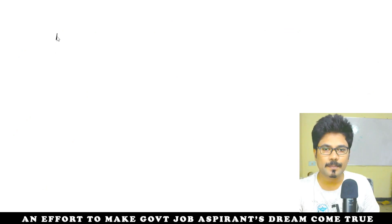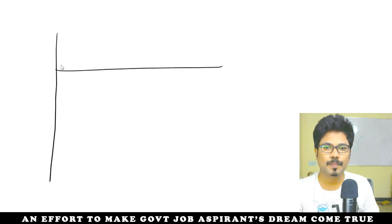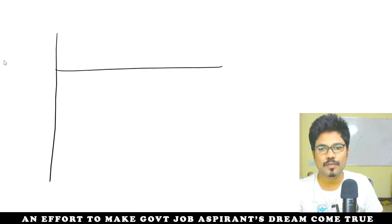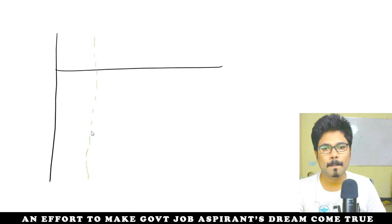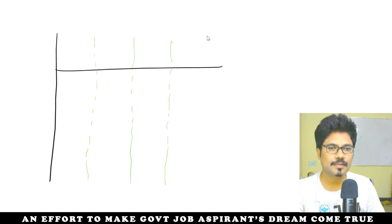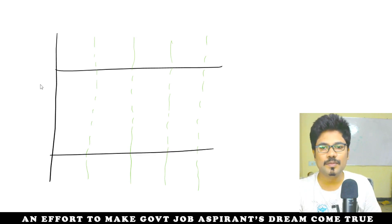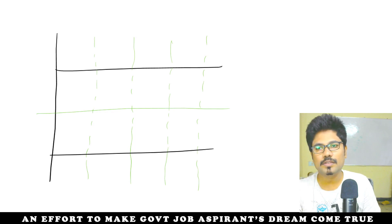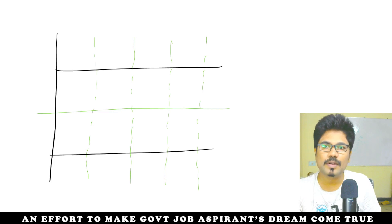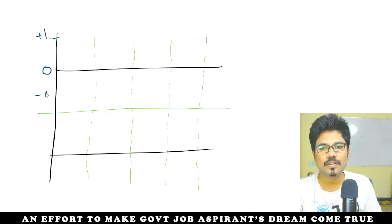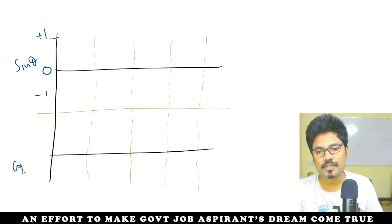Next, I'll draw two things. First, let me draw a straight line. Now I'll draw a wave. To understand how a wave should look, see: this is zero magnitude, this is plus one, this is minus one. This is the sin theta and cos theta function.